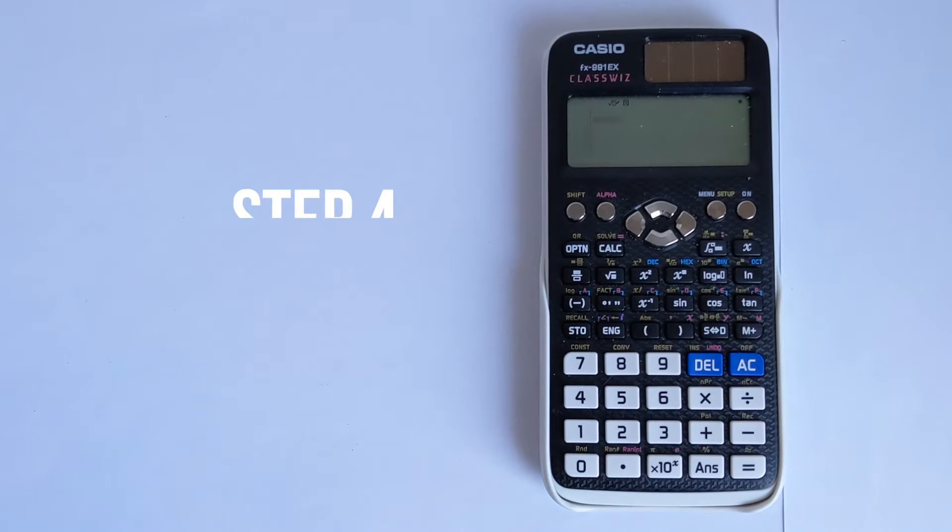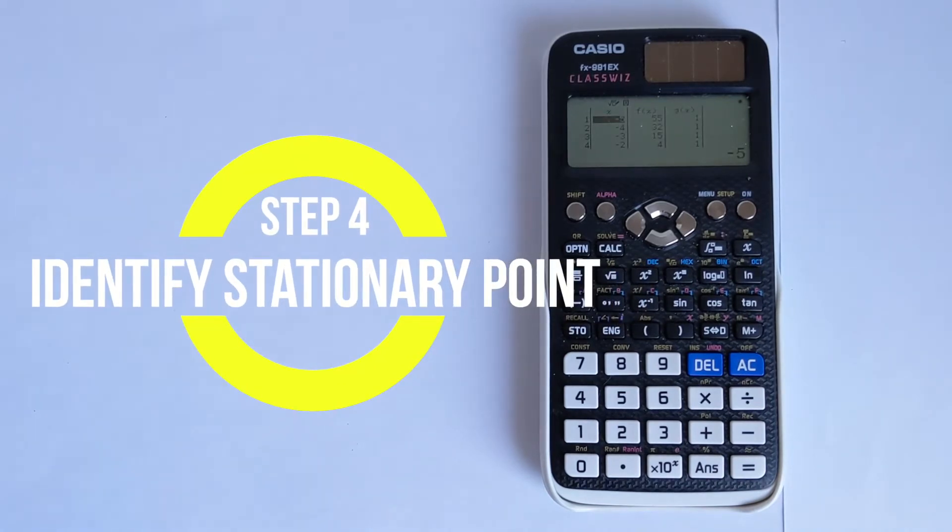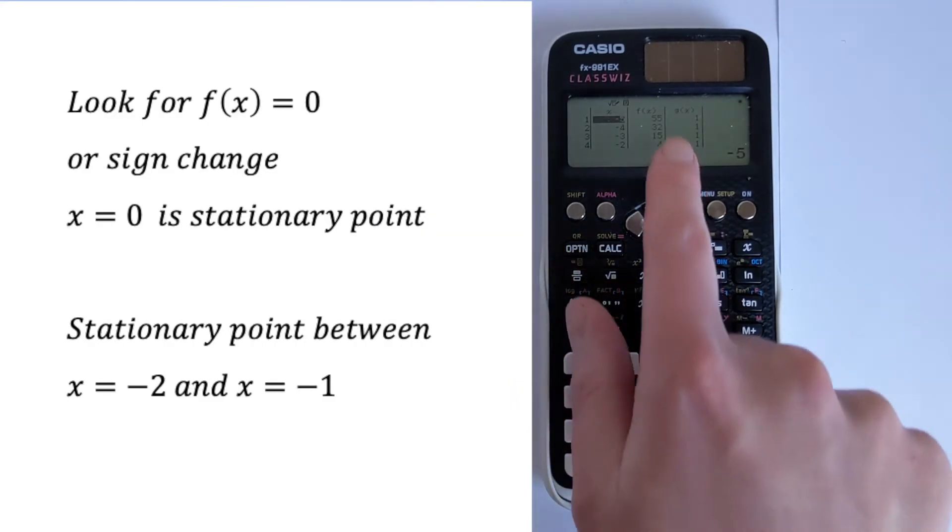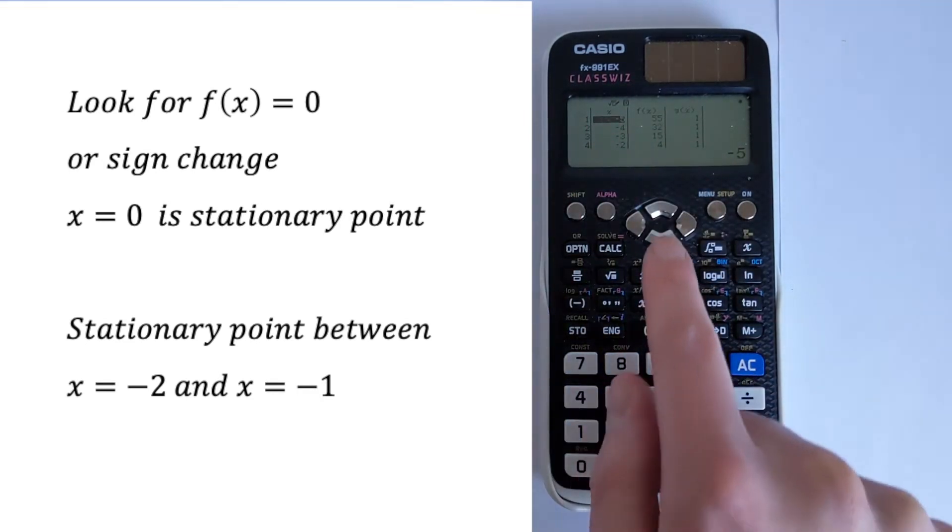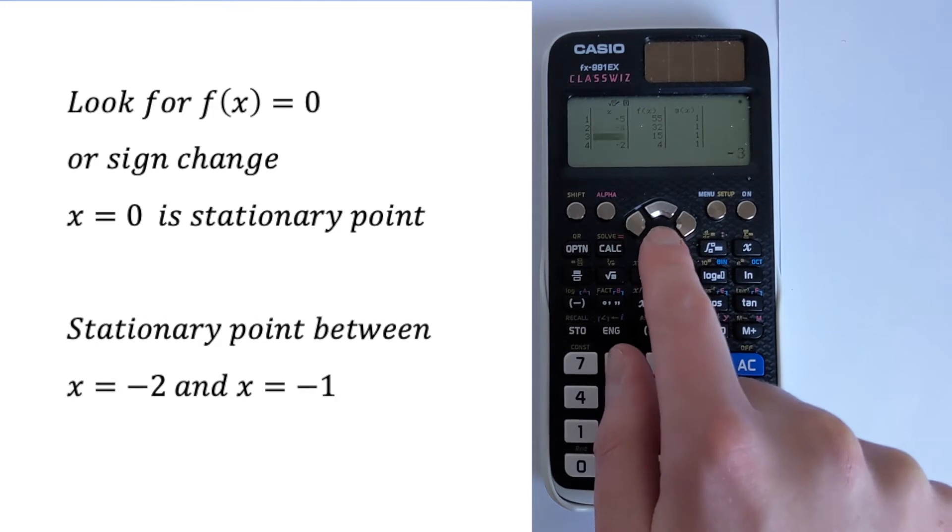And so we press equals, and then we get this table. And we need to interpret the table. So we can see that we've got f(x) here, g(x) we're going to ignore. And then these are all our x values. And when you go through it, you can see that it's decreasing.